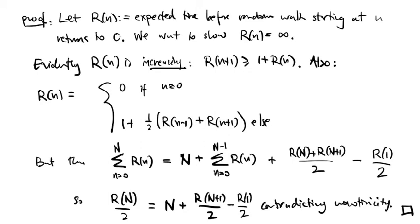Second of all, we have a recurrence relation. r of n is equal to 0 if n is 0 and otherwise is equal to 1 plus the average of r n minus 1 and r n plus 1.